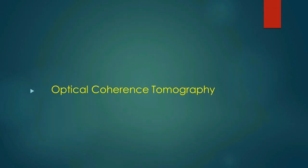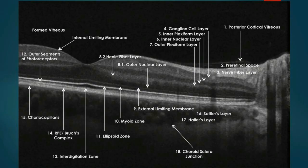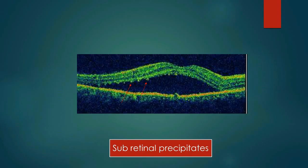Next is optical coherence tomography, which gives near histological-level cross-section of the retinal layers. It is very useful in various retinal disorders — for example, in this case of CSR you can clearly see the subretinal fluid.